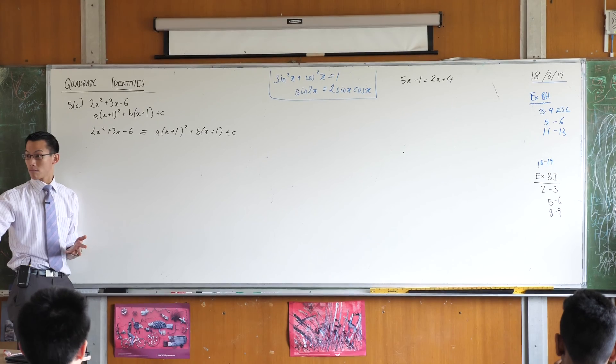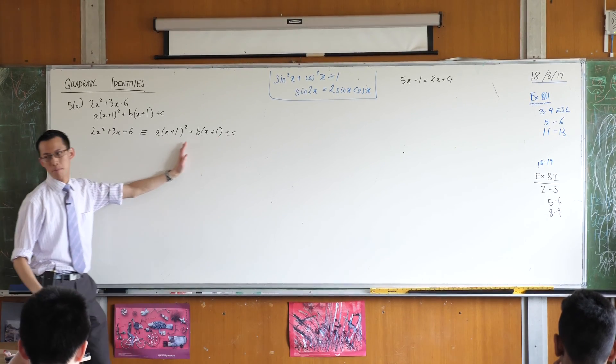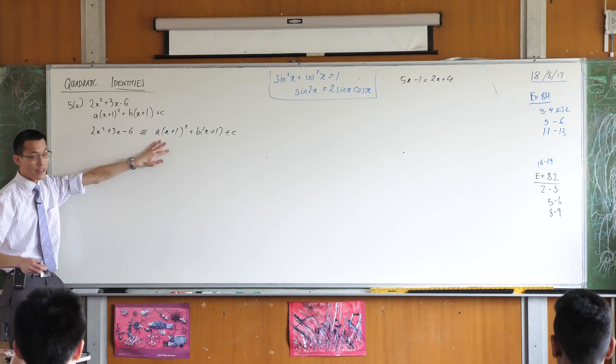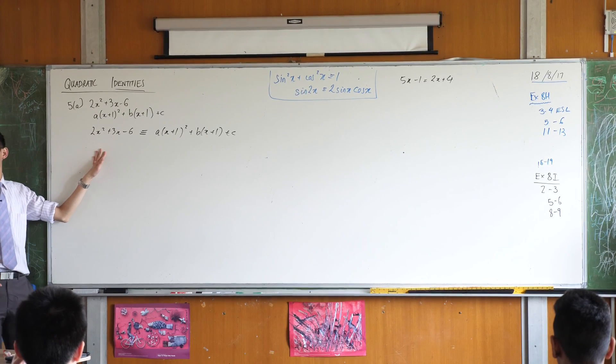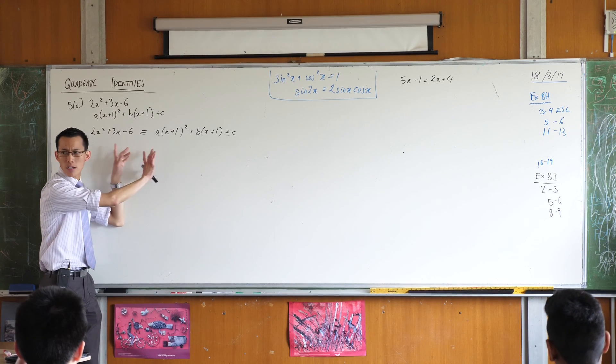If I expand out on the right-hand side I've got a whole bunch of manipulation to do but presumably I will end up with a quadratic in x and there's a quadratic in x over here. So I should be able to do a comparison of what again?